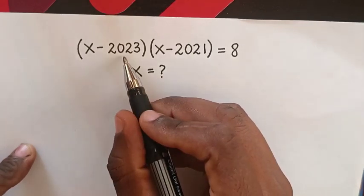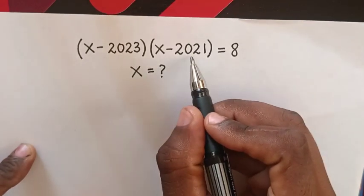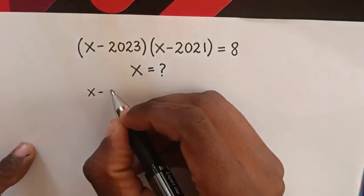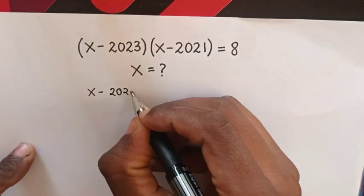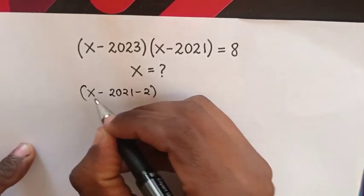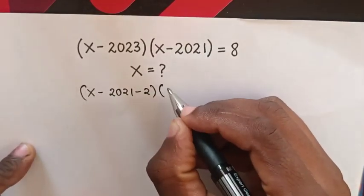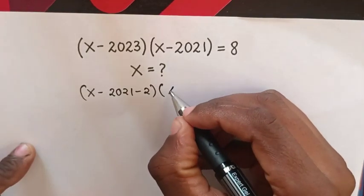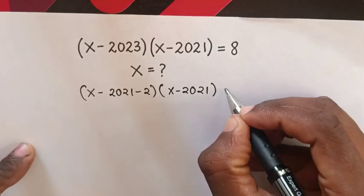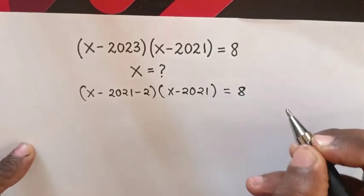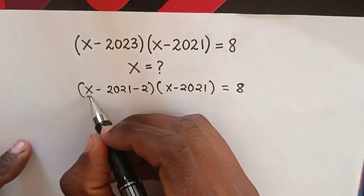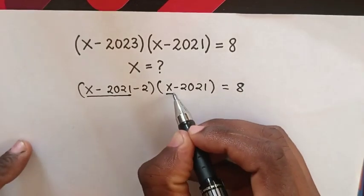From here, 2023 — to make it the same as 2021 — in our equation it will be (x minus 2021 minus 2) times (x minus 2021) is equal to 8.